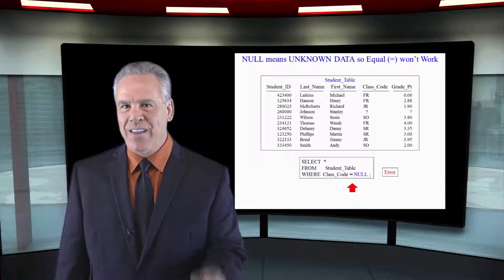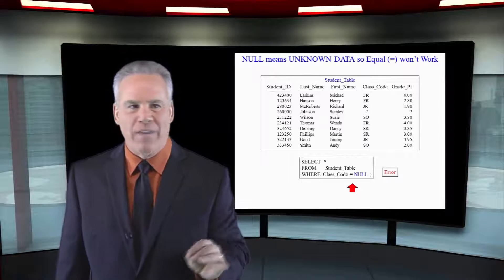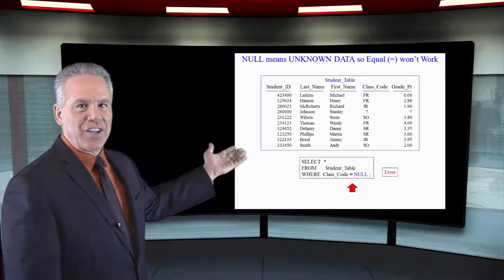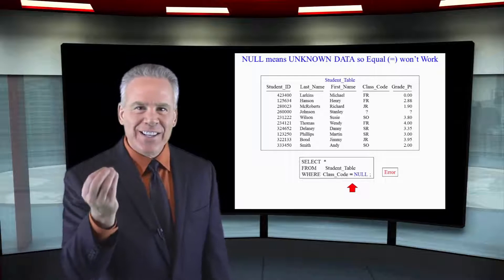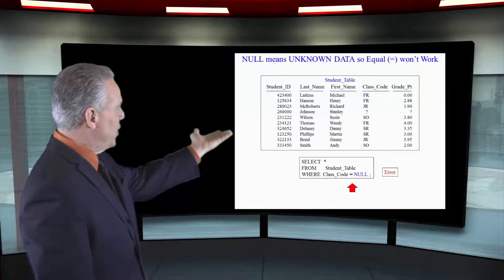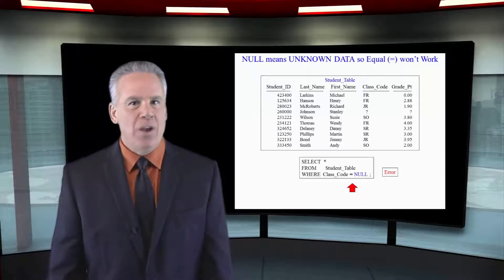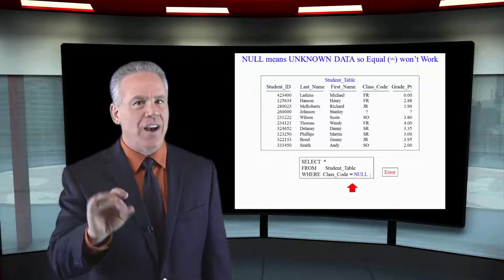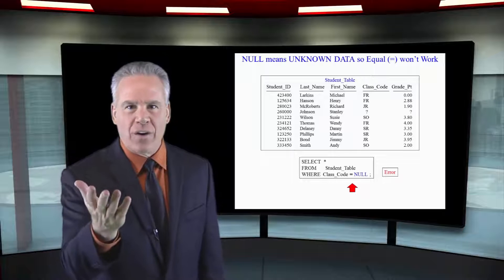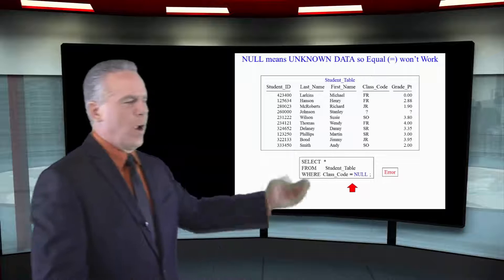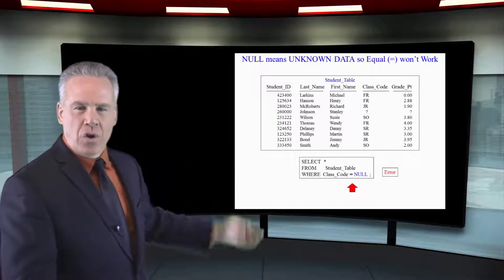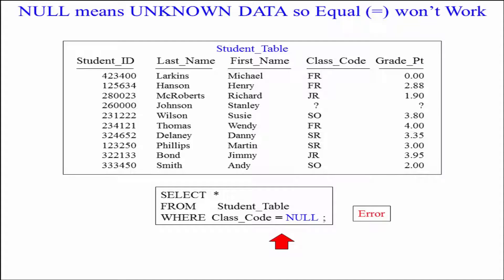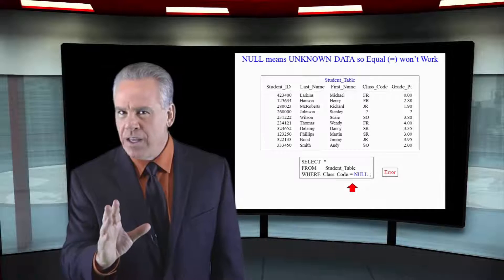Here you're going to see that we're looking for all the null values in the class code. It looks like Stanley Johnson should come back. Stanley's class code is null, which means there's an absence of value, there's nothing there. So when you say WHERE class code equals null, it errors because it goes wait a minute, it equals nothing.